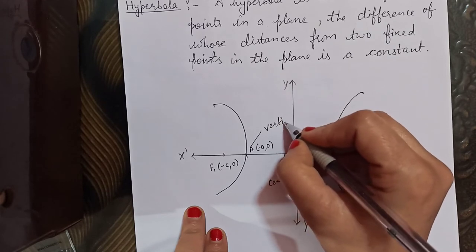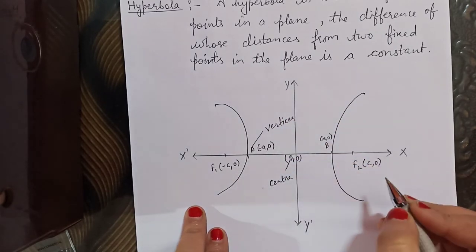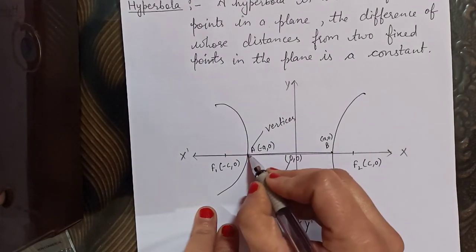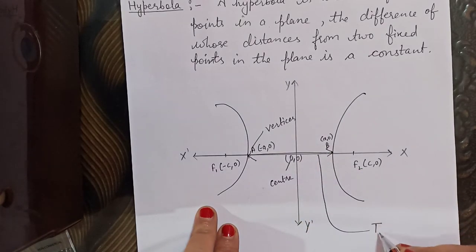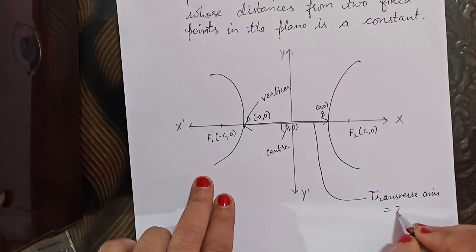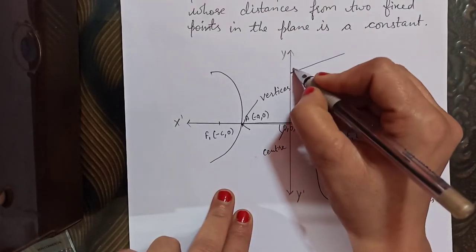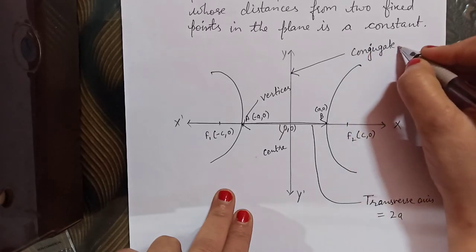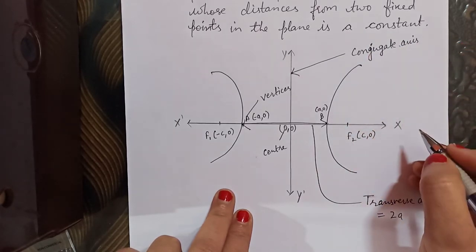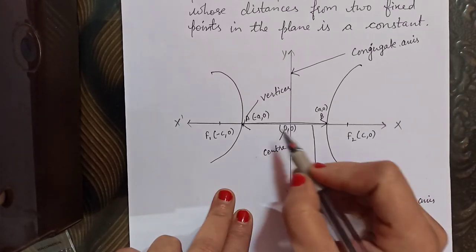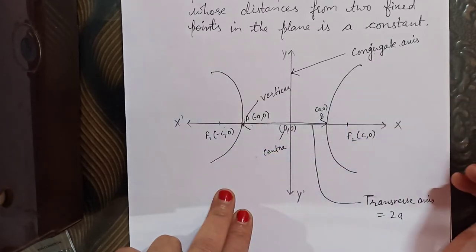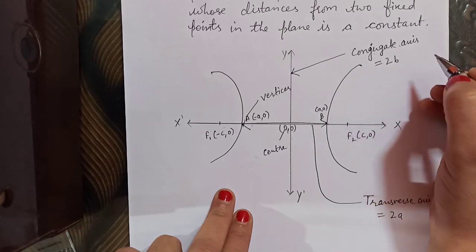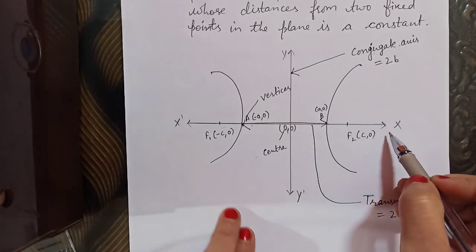These are the vertices of the hyperbola. The vertices on the x-axis are (a, 0) and (−a, 0). The distance between them is called the transverse axis, and its length is 2a — the distance between the two vertices. The other axis is called the conjugate axis.